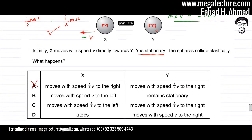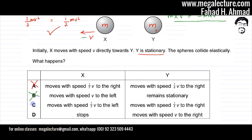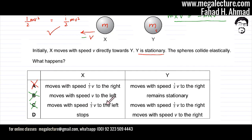Option C states that X moves with half V to the left and Y moves with half V to the right. This is very similar to option A. Since kinetic energy has no dependence on direction, the energy calculation is identical to option A — kinetic energy is not conserved. So option C is also incorrect.